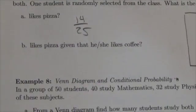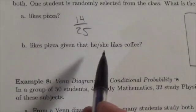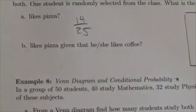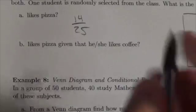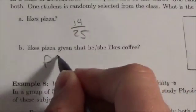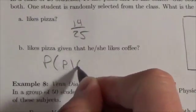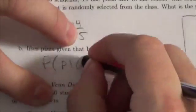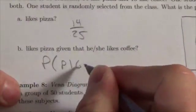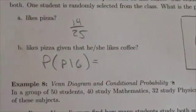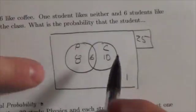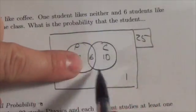Take a look at the next question. What's the probability that a student likes pizza given that he or she likes coffee? We would write this as the probability that they like pizza given that they like coffee. In this case, we're restricting the domain to just the set of students who like coffee.